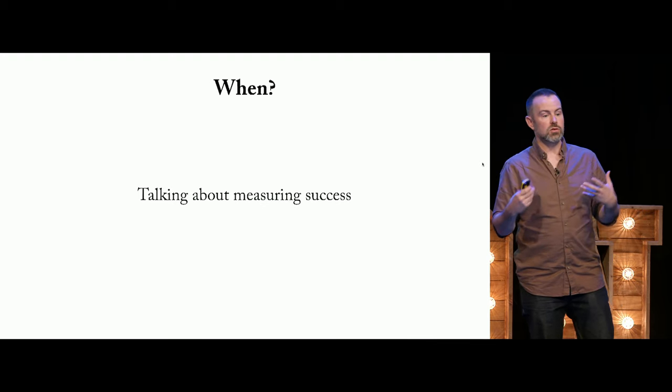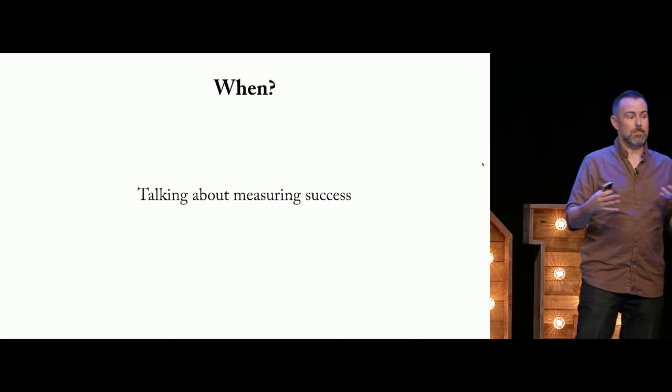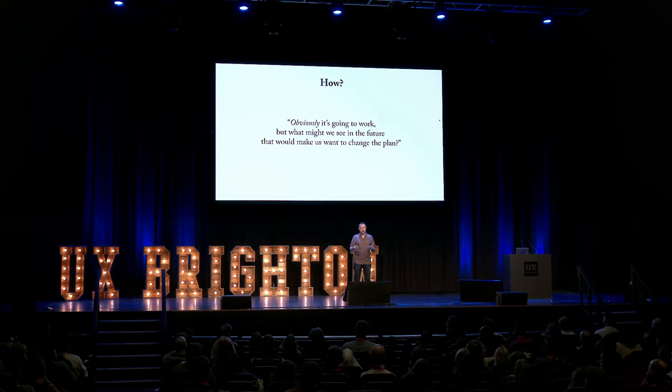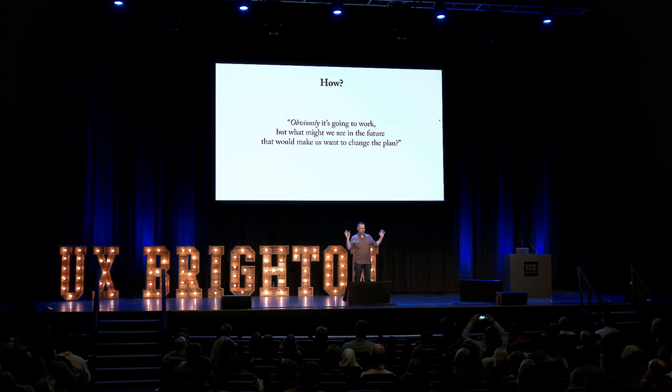You can use pivot triggers anytime you're talking about measuring success, or start a conversation about whether something is working. You can say 'obviously it's going to work — but what weird signals in the future might make us want to change our plan?' You can have this conversation with a headstrong founder or stakeholder, and set a future date where they've decided what signals will change their mind. It doesn't always work, but it works a lot better than evidence on its own.